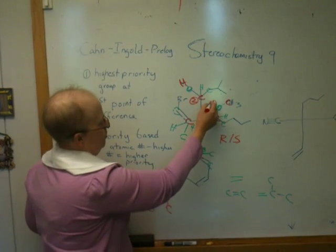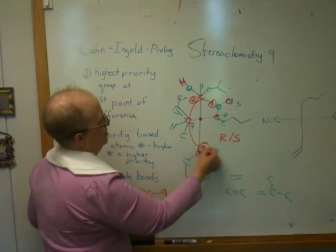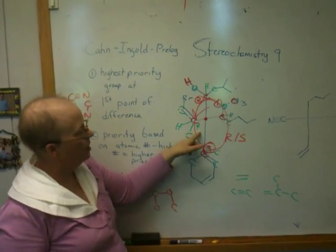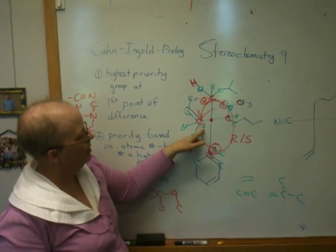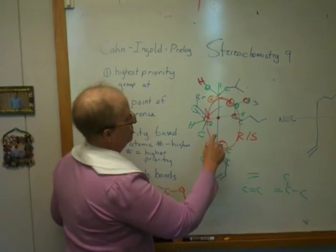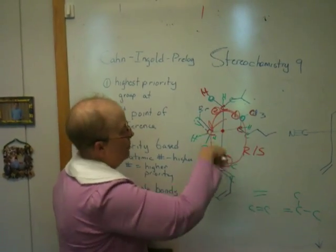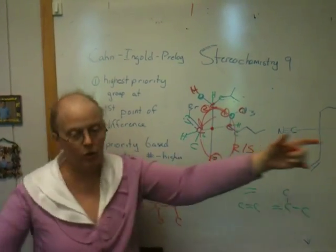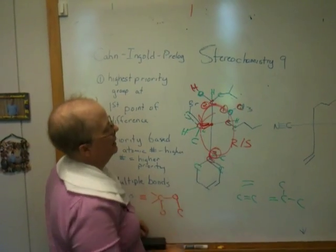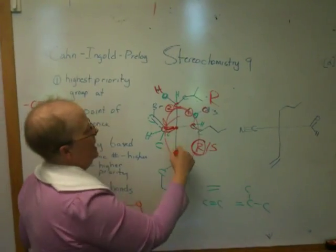You trace a circle from one to two to three. There's three. Trace a circle. The circle looks counterclockwise. But remember, it all depends on where number four is. Where is number four? Number four is coming out towards you. So you have to reverse the designation. Because the rules say trace a circle from one to two to three with four going back. And if it's going counterclockwise, it would be S. However, because number four is on the wedge coming out. This is really a wedge. You have to reverse the designation. I explained that in the prior videos. So this is really R. It looks S, but it's really R.